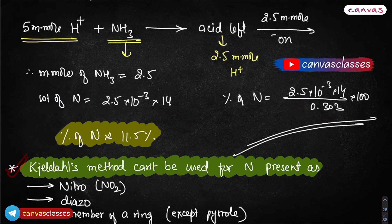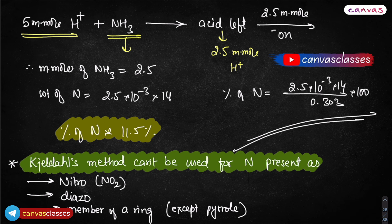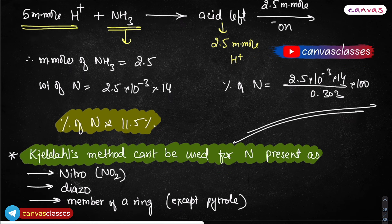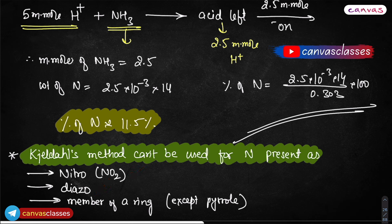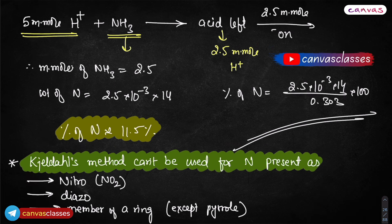Now, important points about when Kjeldahl's method cannot be used: when nitrogen is in the form of a nitro group (−NO₂), it cannot be estimated by Kjeldahl's method. Also, nitrogen in diazo compounds, or nitrogen in a ring (except pyrrole), cannot be analyzed by Kjeldahl's method. These have been asked in previous exams, so please make sure you understand these two examples.